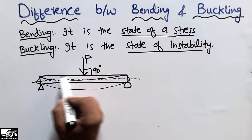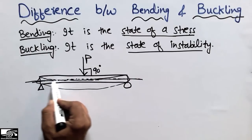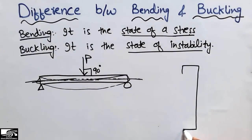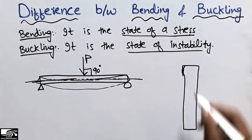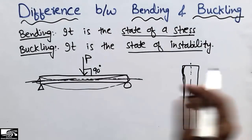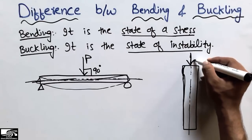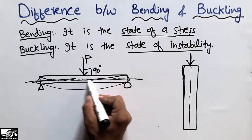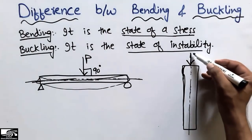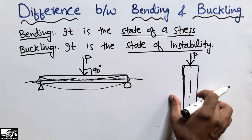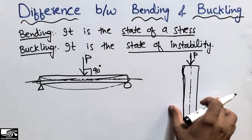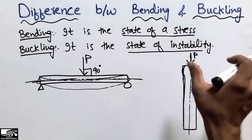When the load acts perpendicular to the axis of the beam, bending will occur. In case of buckling, it is different. Consider a column — these are the axis of this column — and when the load is acting along the axis of this column, not perpendicular. So unlike the beam where the load was perpendicular to the axis, here in the column the load is acting parallel to the axis, and in this case the column will not bend but will produce instability.